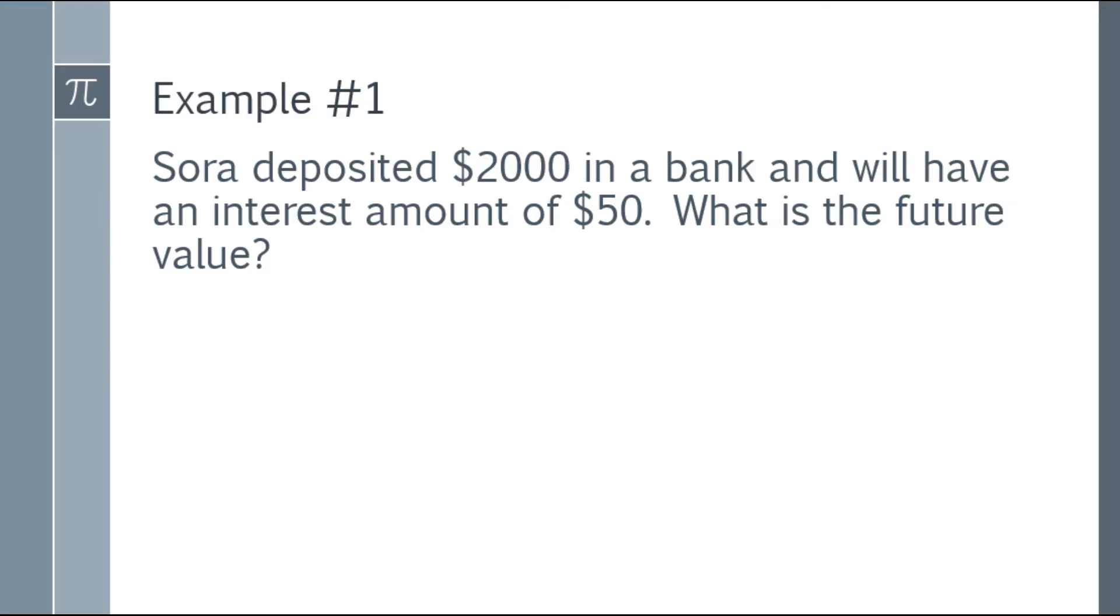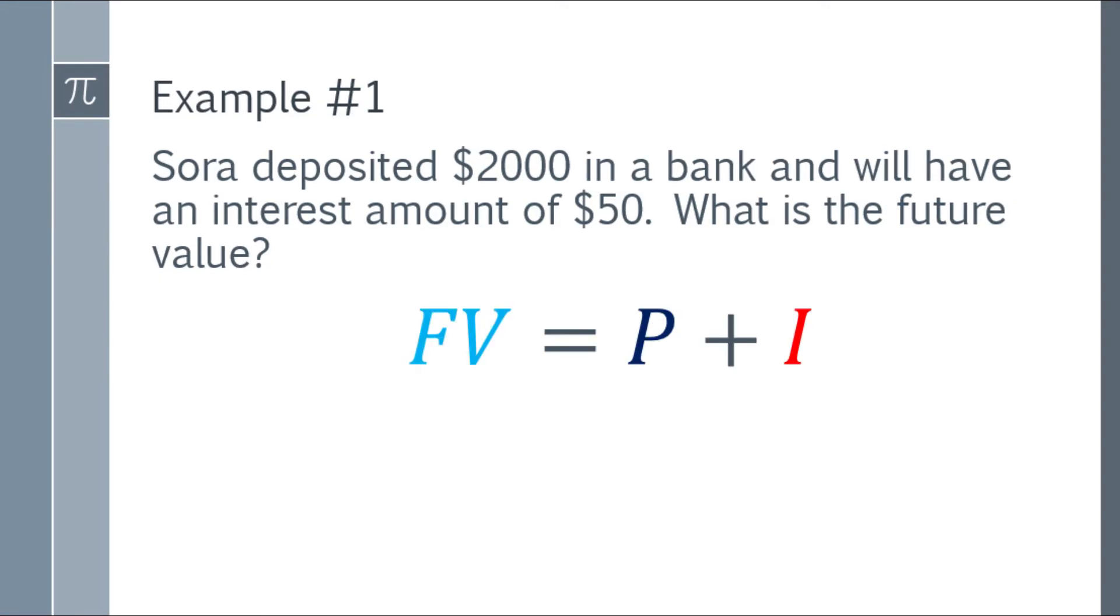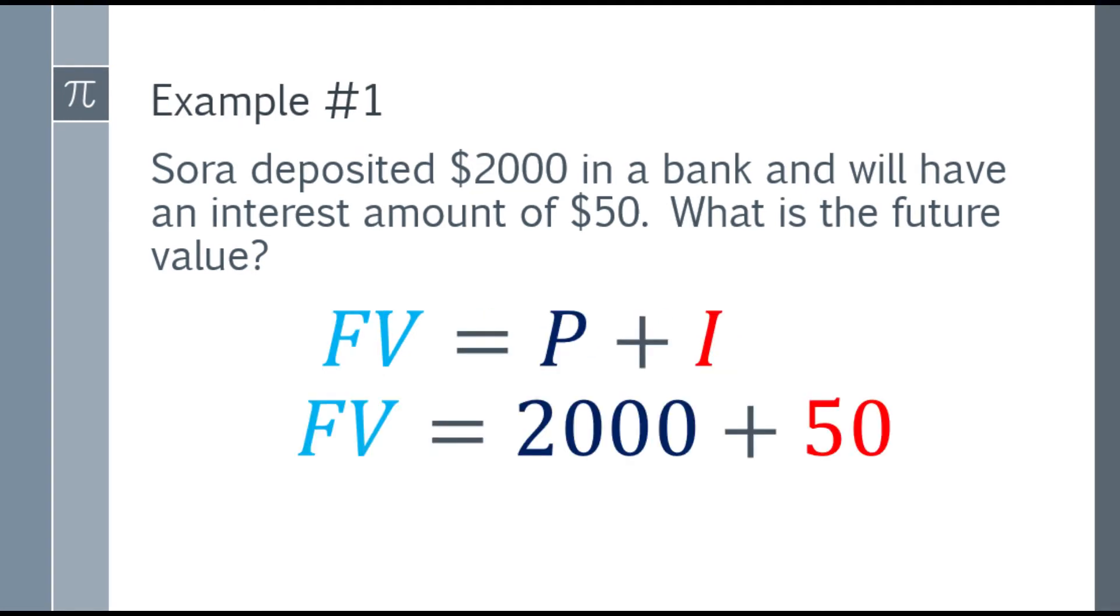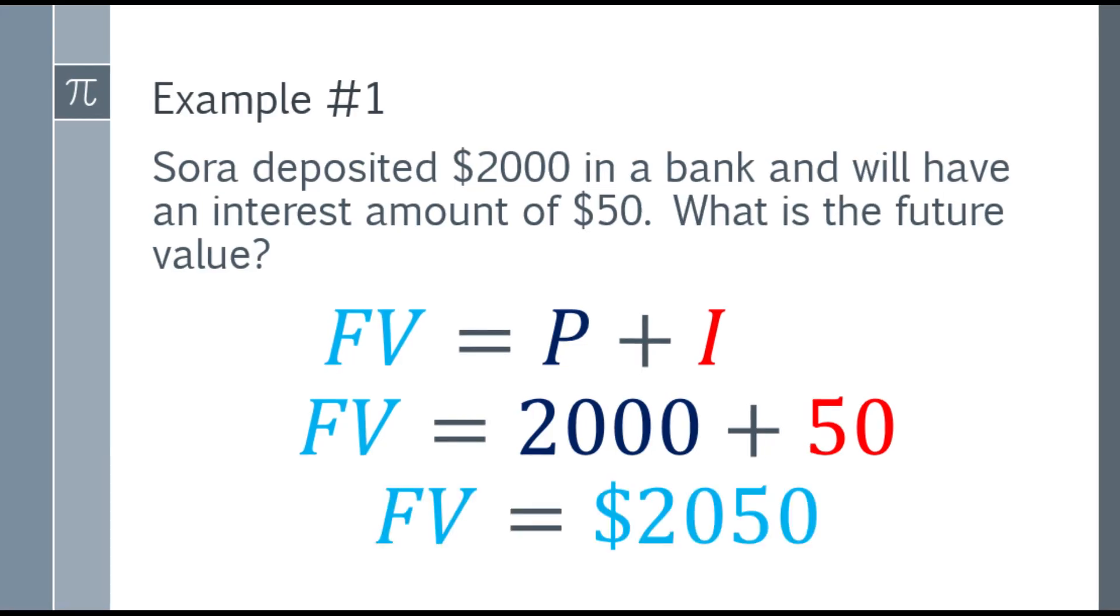So how do we get the future value? We have the formula FV, future value, is equal to the principal plus interest. So we just add the principal plus interest to get the future value. We'll substitute into the formula. So future value is equal to $2,000 plus $50, and the answer is $2,050. So that's the future value in this example.